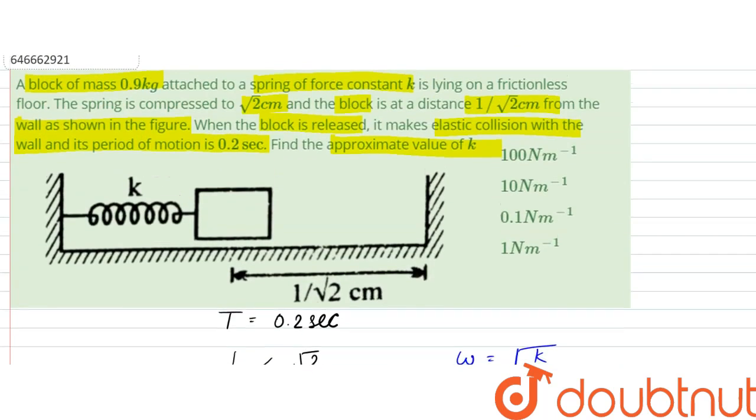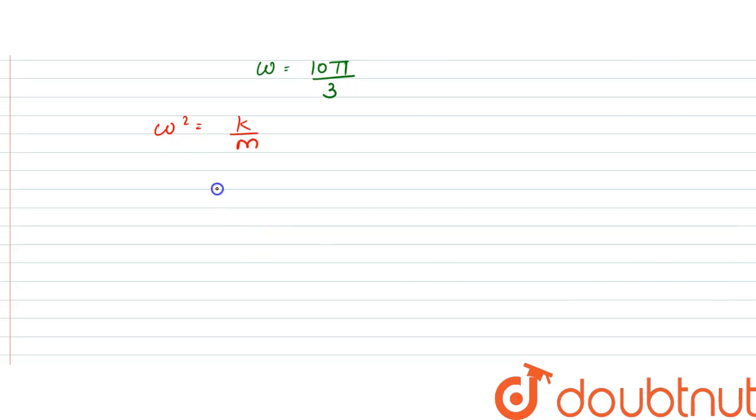So here, mass is given as 0.9 kg, so k can be written as omega square, so that would be 100 pi square by 9 into 0.9, so it would be 9 by 10.